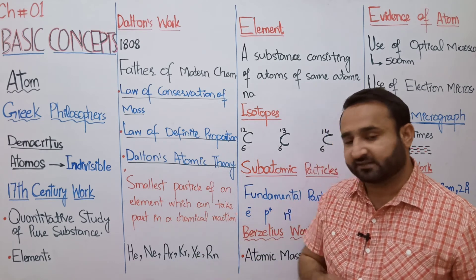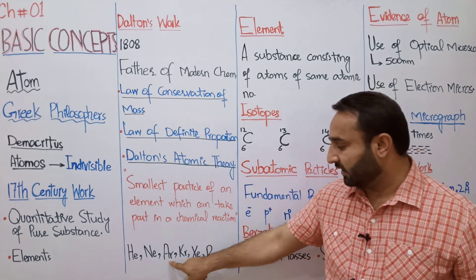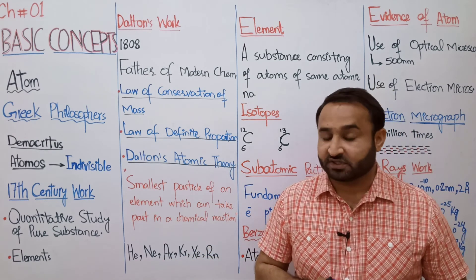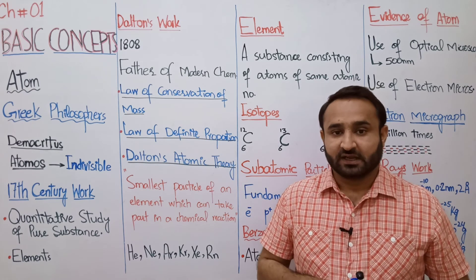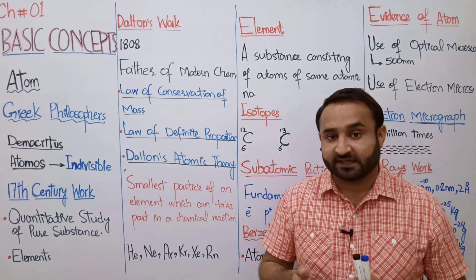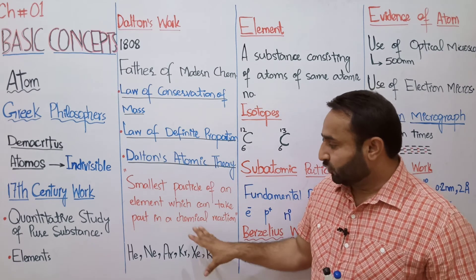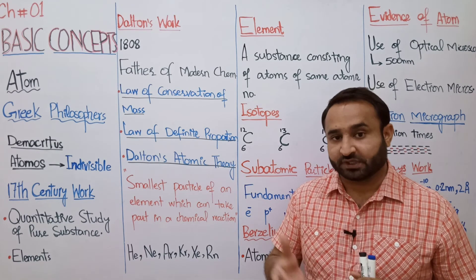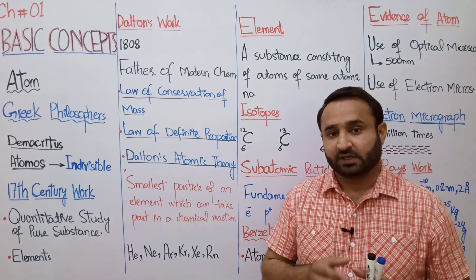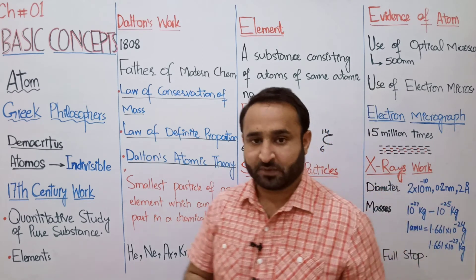Noble gases کی example لیں — helium، neon، argon، krypton، xenon، اور radon — یہ single atom کے طور پر exist کرتی ہیں کیونکہ ان کے octet یا duplet complete ہوتے ہیں، اس لیے انہیں noble gases یا inert gases کہتے ہیں۔ باقی elements جیسے nitrogen، oxygen، اور hydrogen کے atoms دو دو جڑ کر H₂، N₂، یا O₂ بناتے ہیں۔